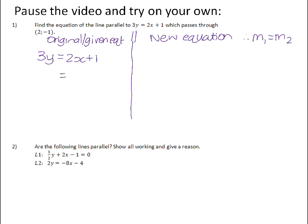So remember, you can only read the gradient from an equation if your equation is in standard form. So we need to get it into the form y equals mx plus c, and we do that by dividing through by 3. That means that the gradient of this equation is 2 thirds.